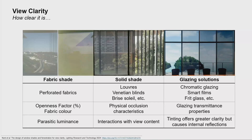When we look more closely at obstruction properties, we categorized the various types of shading into three main categories: fabric shades, solid shades, and glazed solutions.